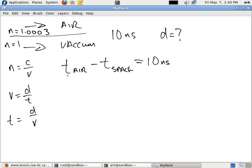So, that means for this particular case, the time in air would be the distance divided by the velocity of air minus the distance, which is the same, by the way, for both rays of light, divided by the velocity in space. And that's going to equal 10 nanoseconds.